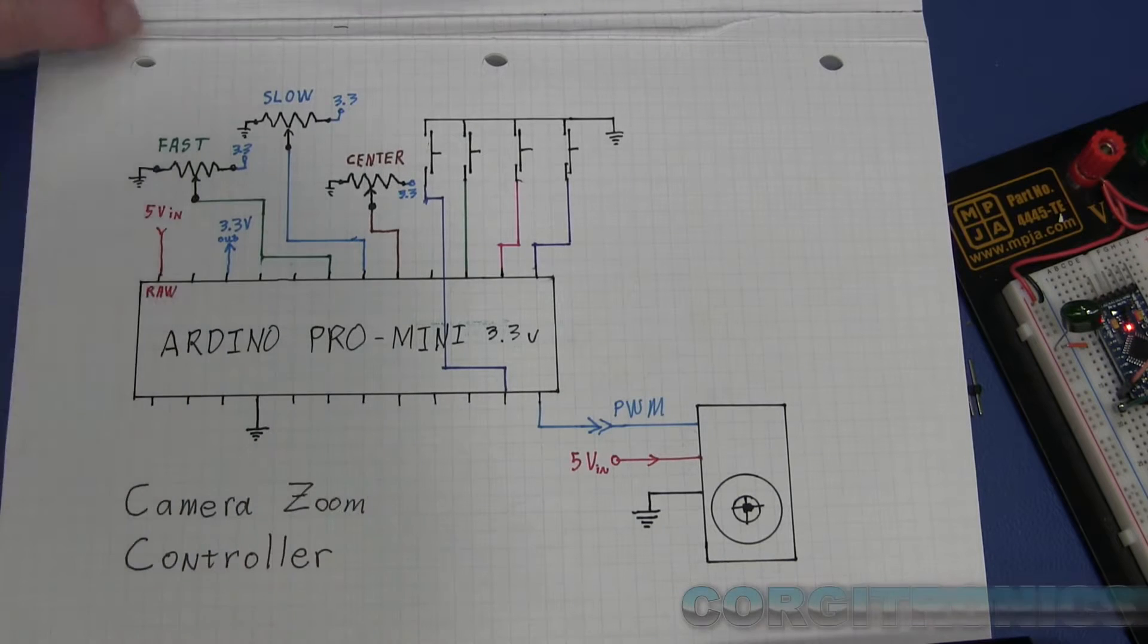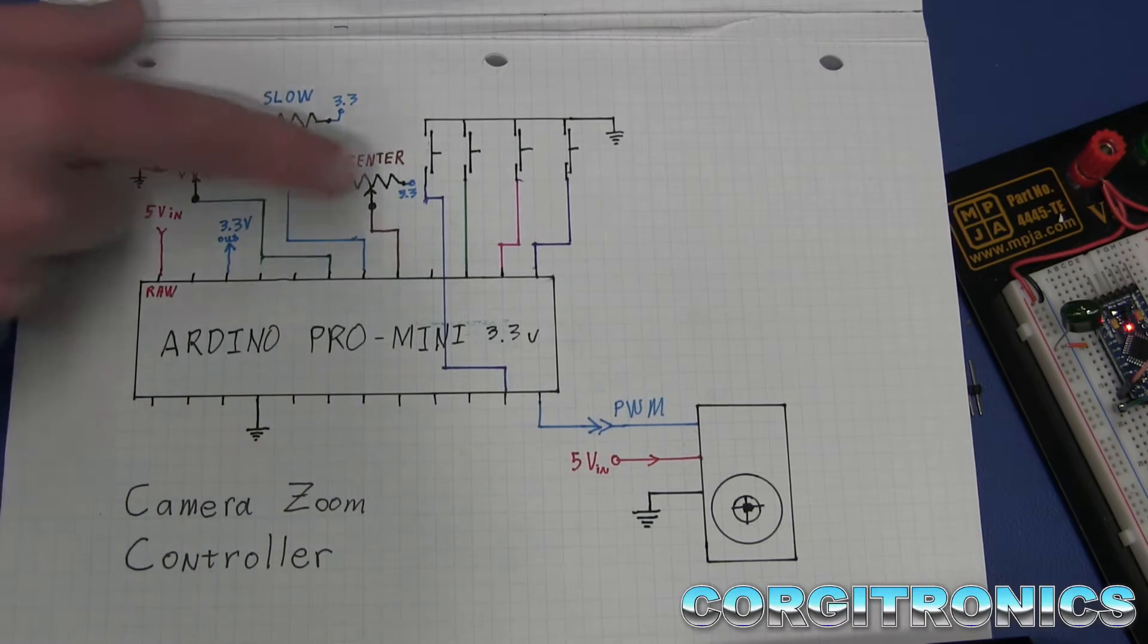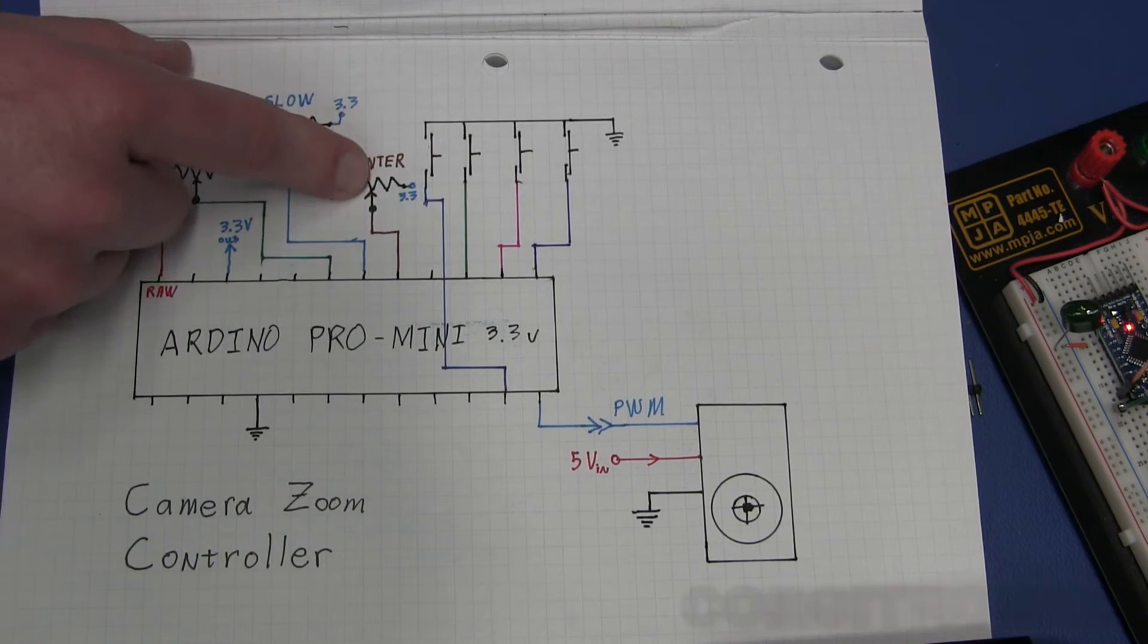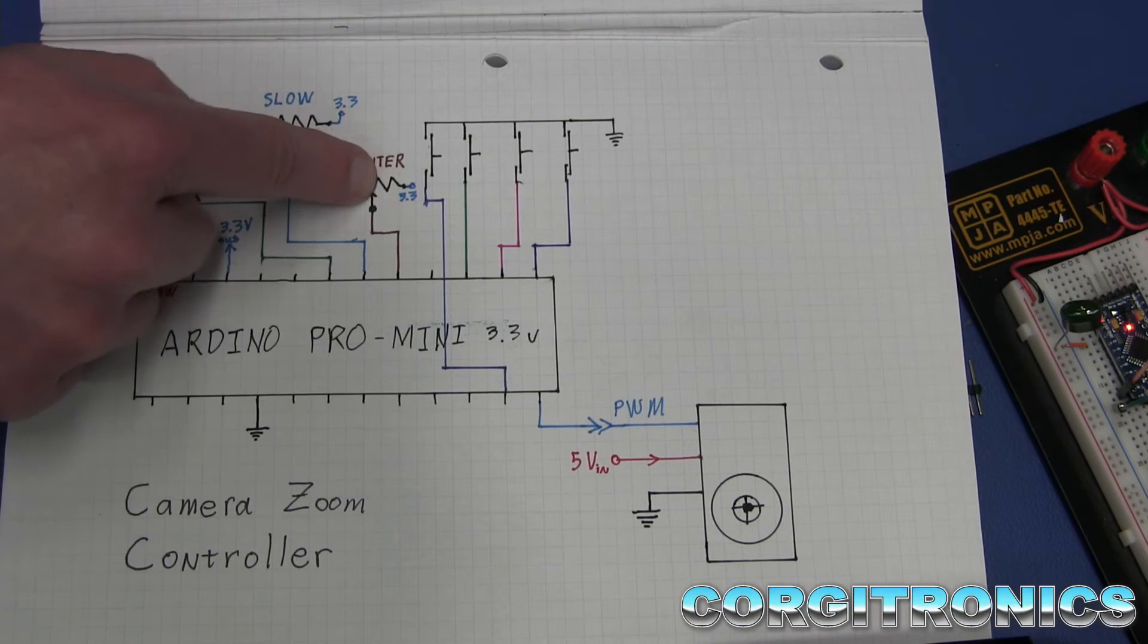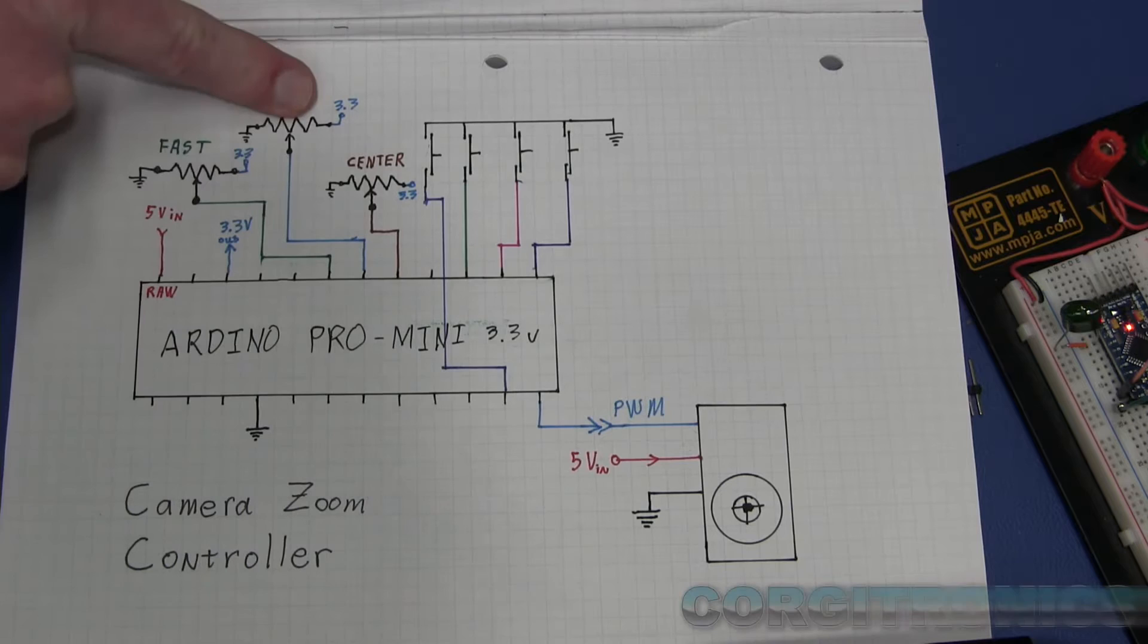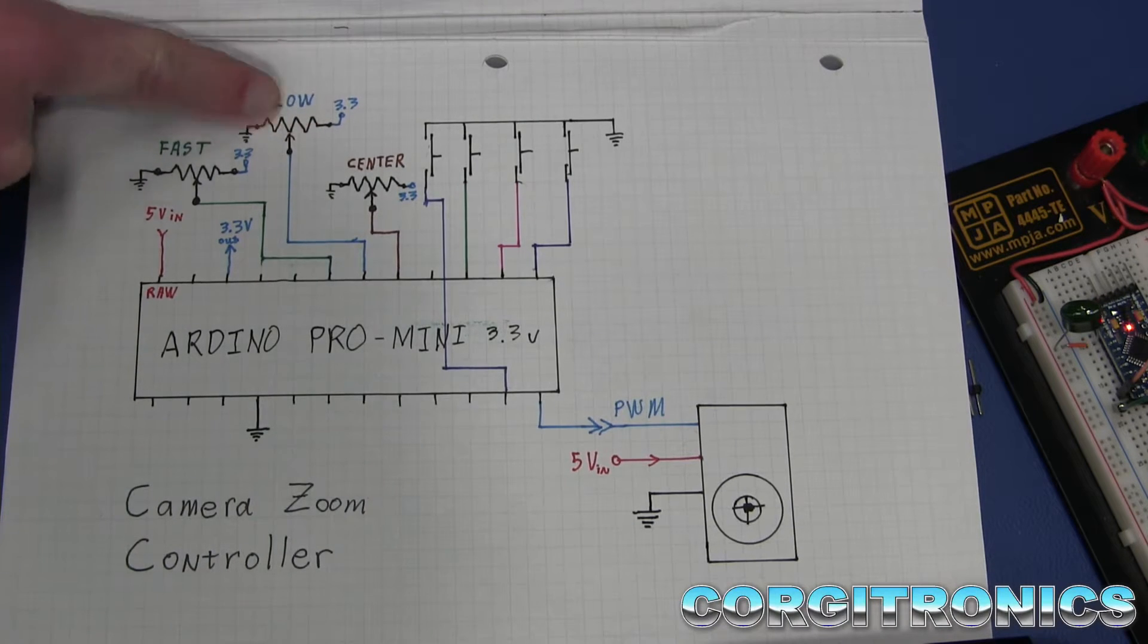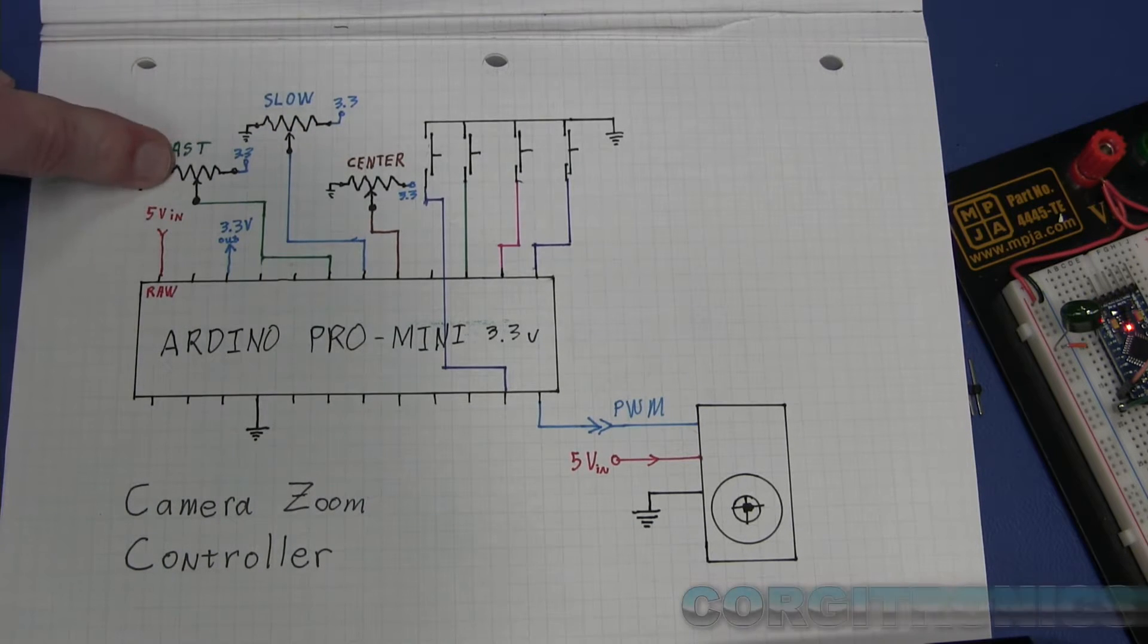So here we have the circuit. There's a center pot. So when I don't want it to zoom anywhere, this will be the resting position of it. Then adjust the slow speed, the slow zoom in or out speed, and the fast zoom in and out speed.